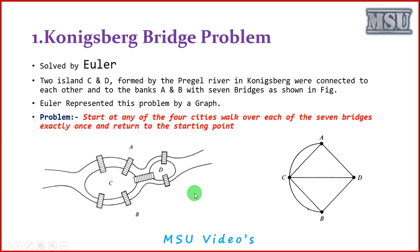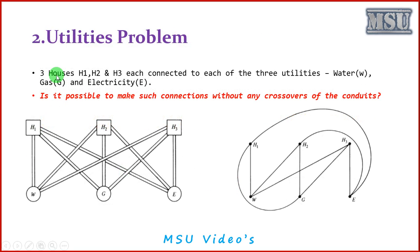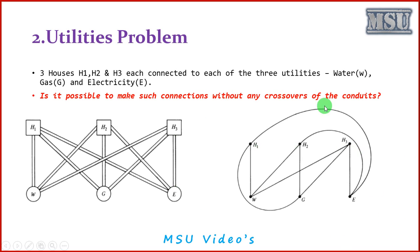Once a problem is represented using a graph, you can easily analyze it. The second problem is the utilities problem: three houses H1, H2, H3, each connected to three utilities — water, gas, and electricity. Is it possible to make such connections without any crossover? We have three houses and three utilities, and we must connect each utility to all houses without crossing over each other. This problem is also represented using a graph, and it is also not possible, but its representation with graph theory is what we are discussing.